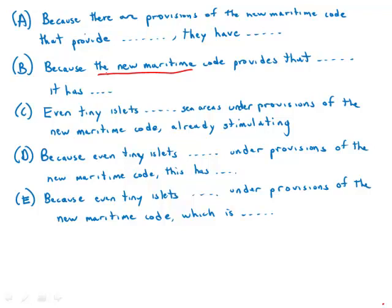Thing number two to consider is that we're flip-flopping back and forth between provisions, the noun form, and provide, the verb form. In general on the GMAT, when you have one of these flip-flops between a noun and a verb form,